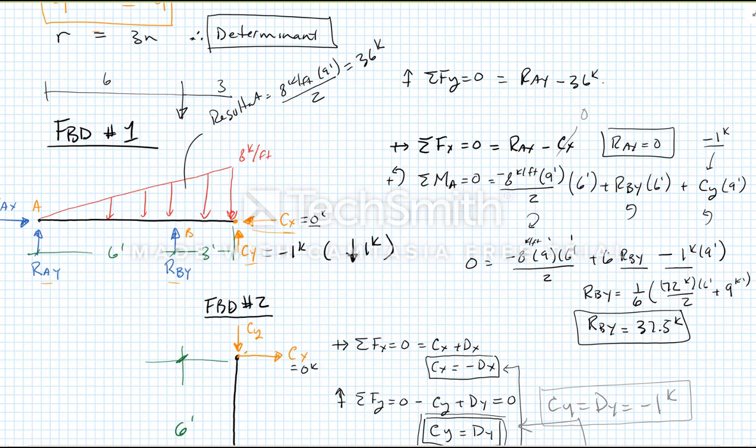Minus 36 kips, and then minus one kip, and plus 37.5 kips. And I get RAY is equal to 0.5 kips going up. And I have solved for all my reactions.